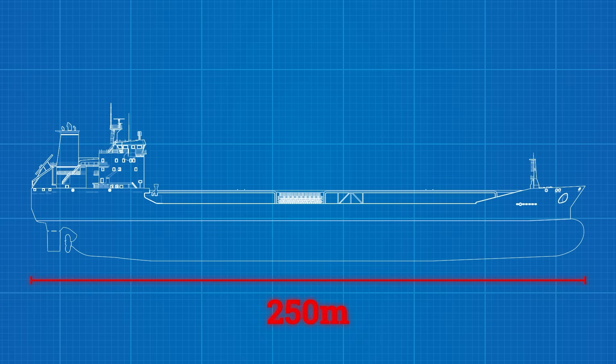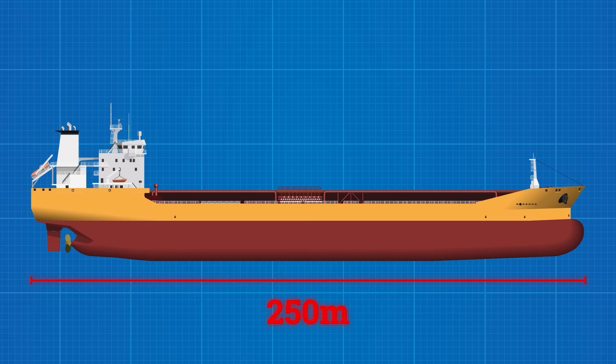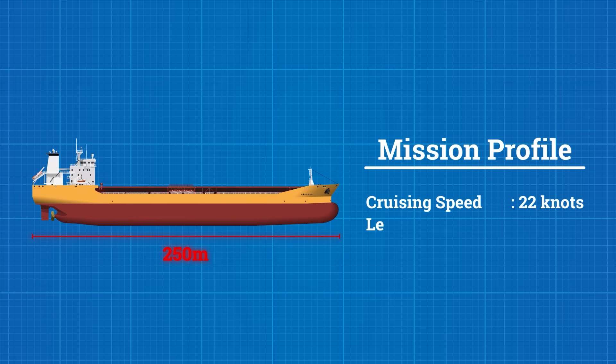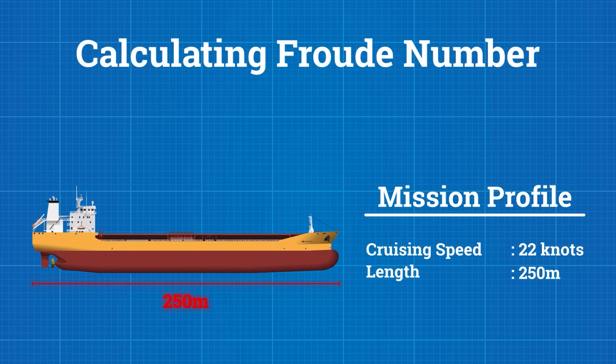Engineers begin with the full-scale ship. Its length and design speed are known, usually from the mission requirements. From that, the full-scale Froud number is calculated.